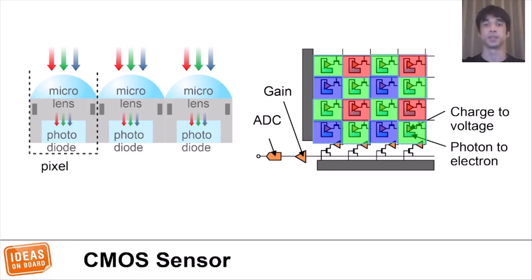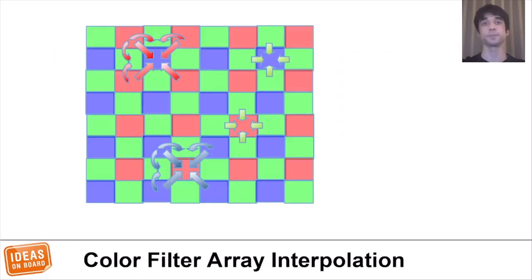The filter is a range, like shown. There are two greens for every one red and one blue, since the human eye is more sensitive to green. But this means that each pixel in our image is missing two colors. So to solve that, we have to do a bit of processing.